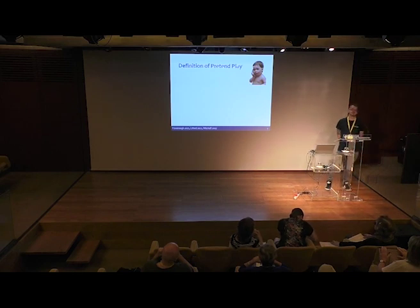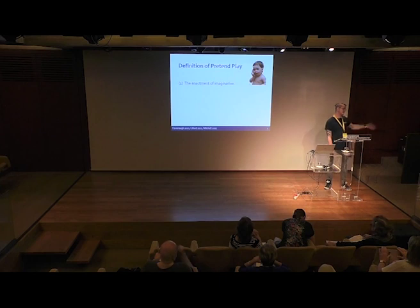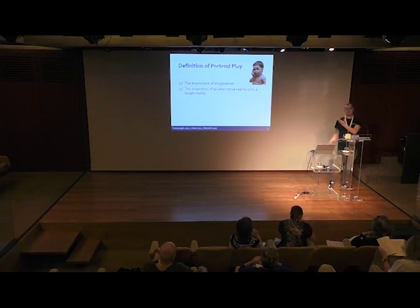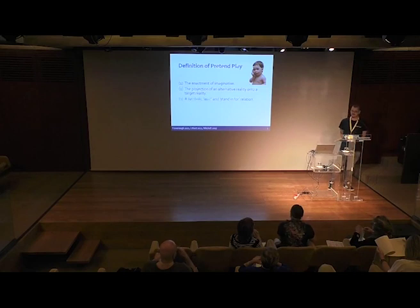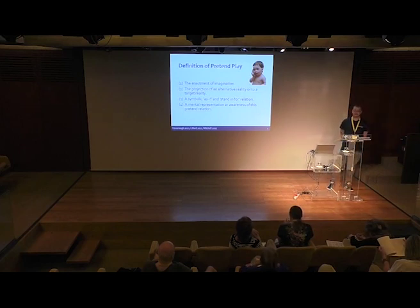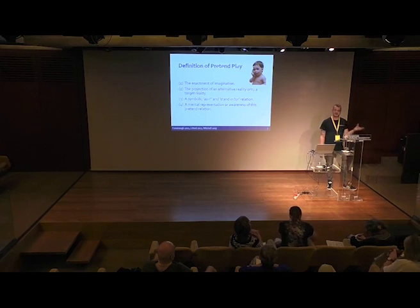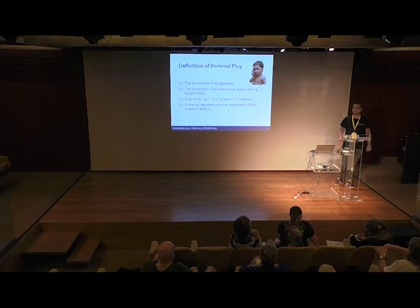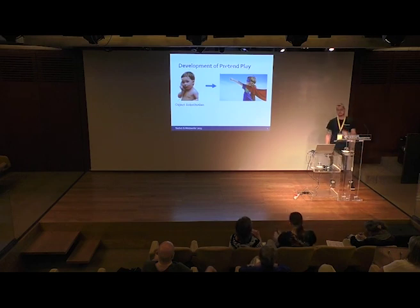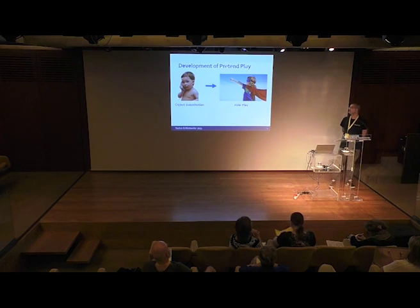Some definitional features of pretend play found in the literature are that it can be defined as the enactment of imagination, where you project an alternative reality onto a target reality. So here we have a mouse, and what's projected onto it is that it's a telephone. We can say there's a symbolic 'as-if' or 'stand-for' relation in pretend play. One further distinction we have to make is between object substitution — like the mouse being a telephone — and role play, which comes later and is a lot more complex.